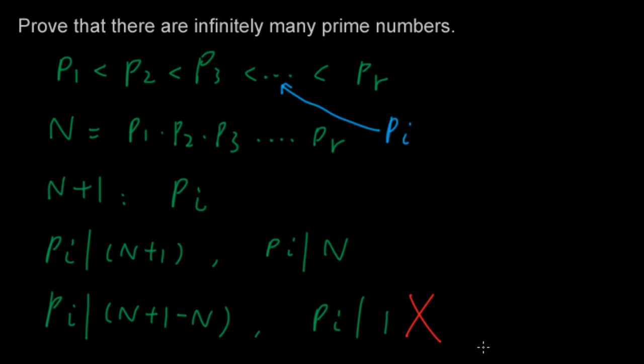Therefore, we cannot assume that there are finitely many prime numbers. And we've proved that there are infinitely many primes.